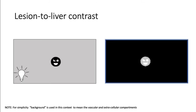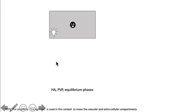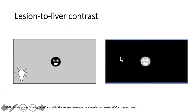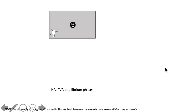Contrast agents in imaging are used to visualize a lesion by making the background brighter than the lesion, or vice versa, by making the lesion brighter than the background. For the liver we use two kinds of contrasts.